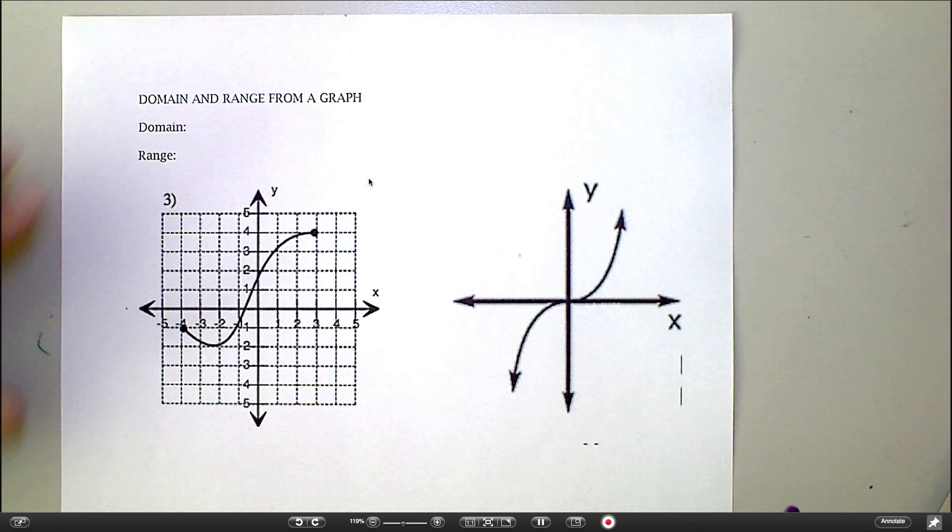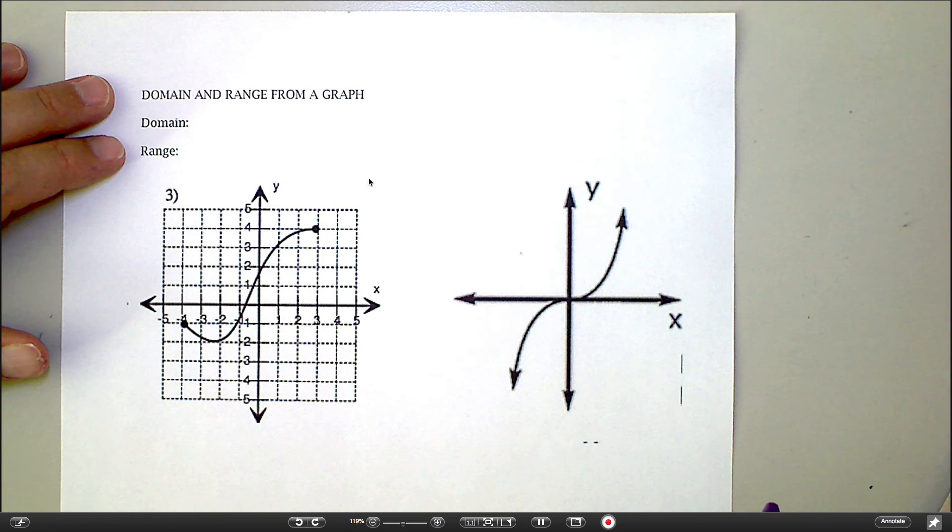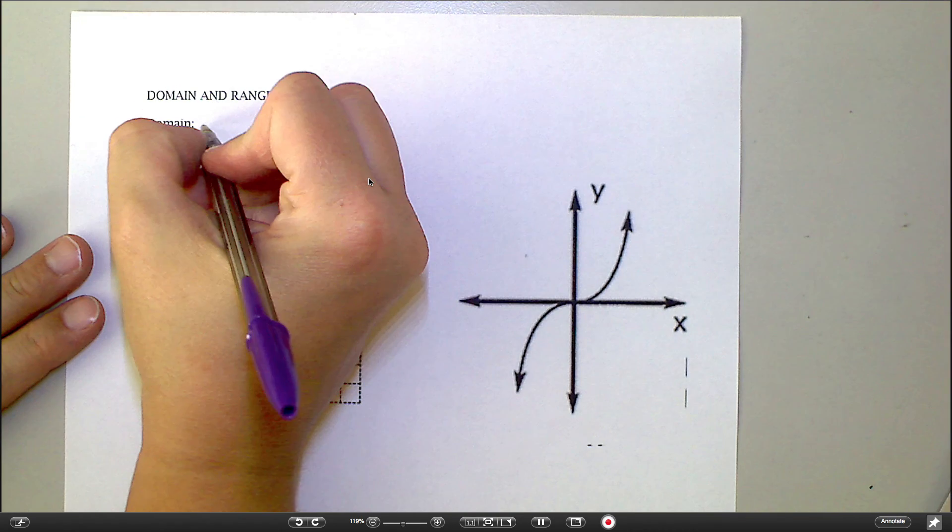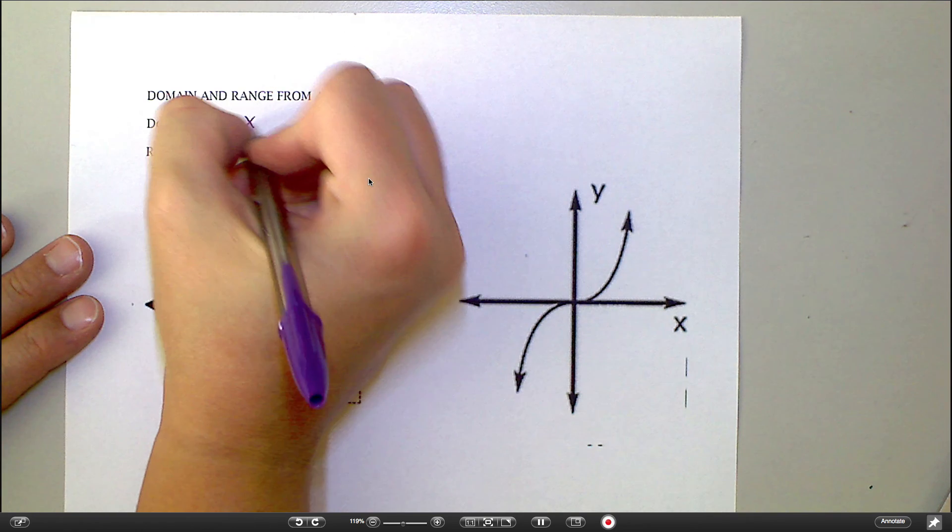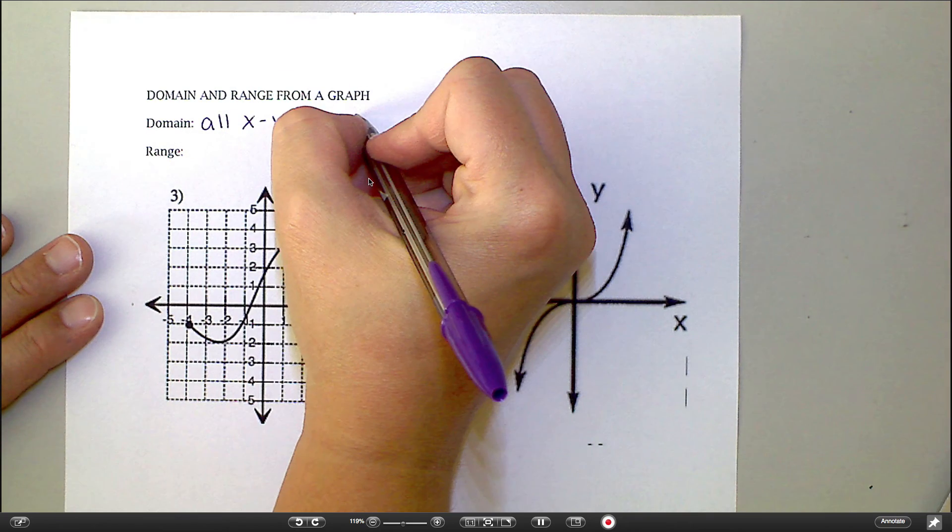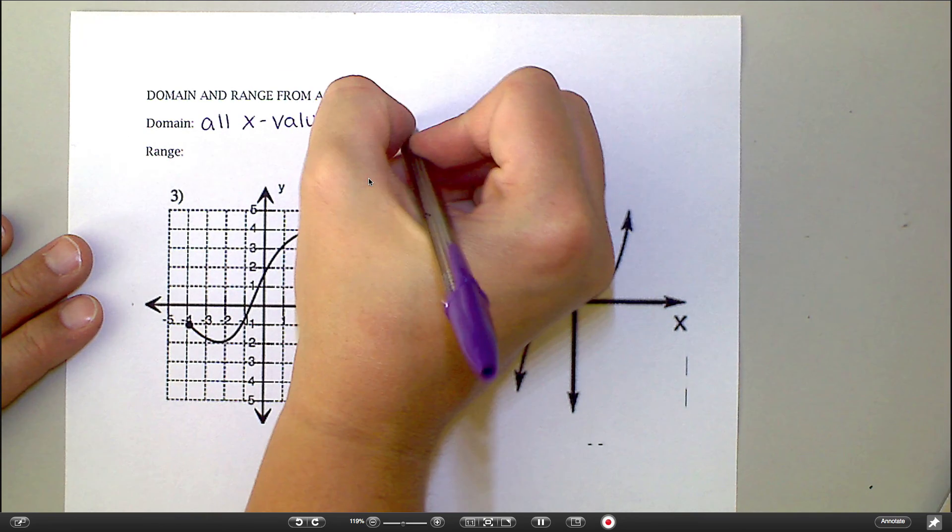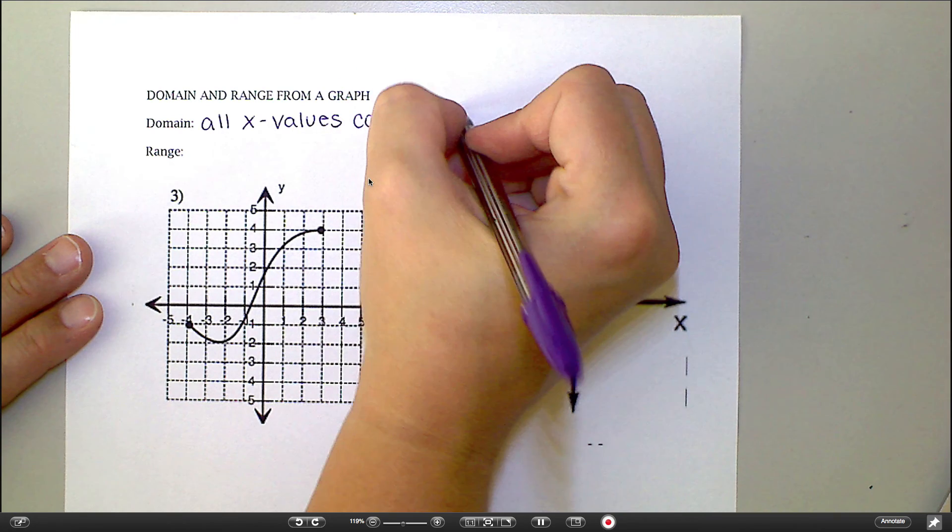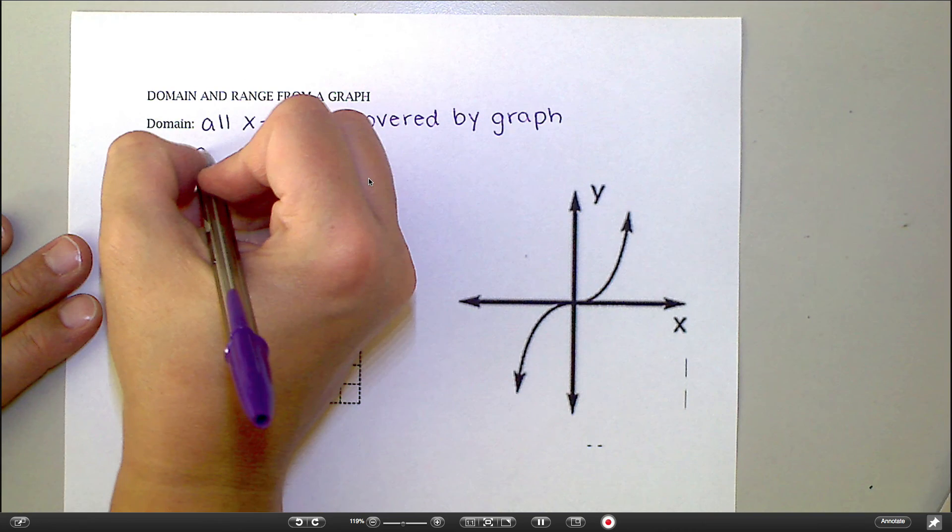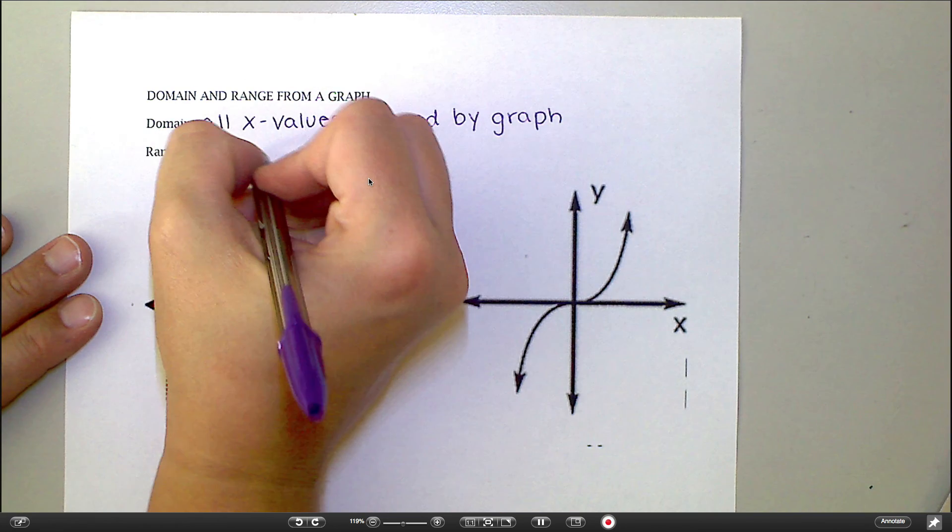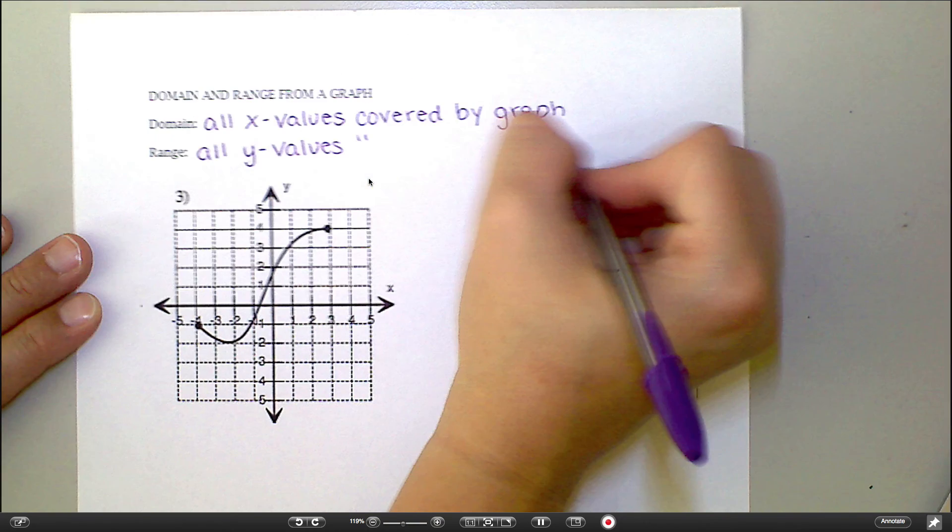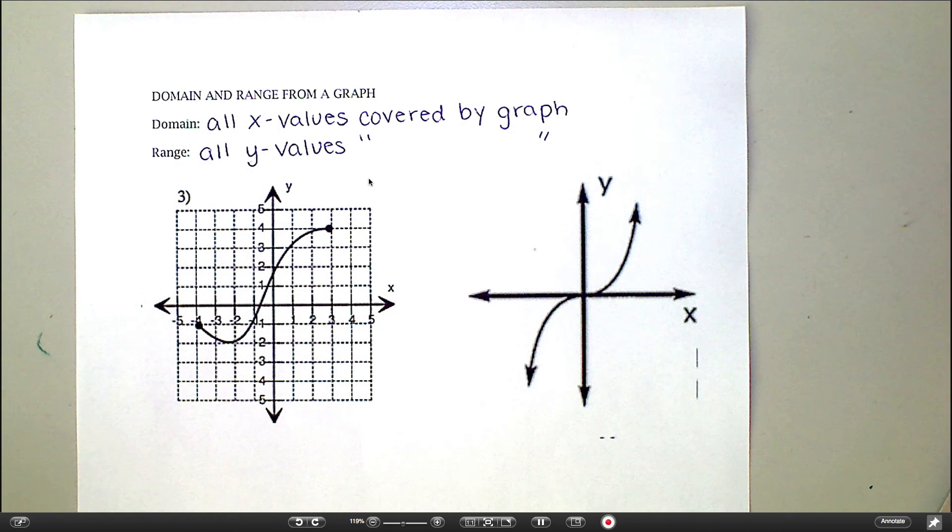So, when you're thinking about a graph, domain and range do still mean the same things. But sometimes it's easier to phrase the question better. The domain is all x values covered by the graph. And then the range is the same thing except it's all y values covered by the graph. And I'll show you what I mean by that in just a minute.